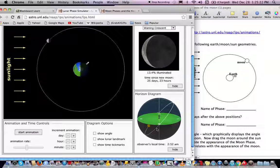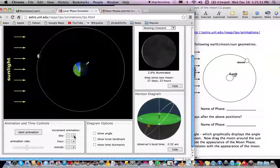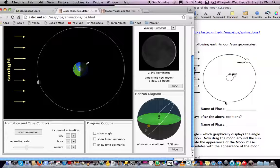It also asks what phase it would be five days later, and here you can just increment it by hitting the day button here five times. One, two, three, four, five. So it would be Waxing Crescent five days after Waning Crescent.